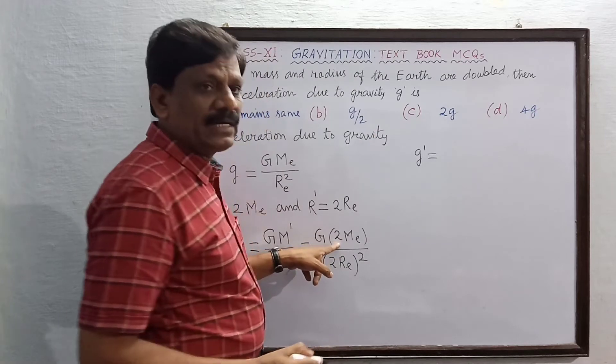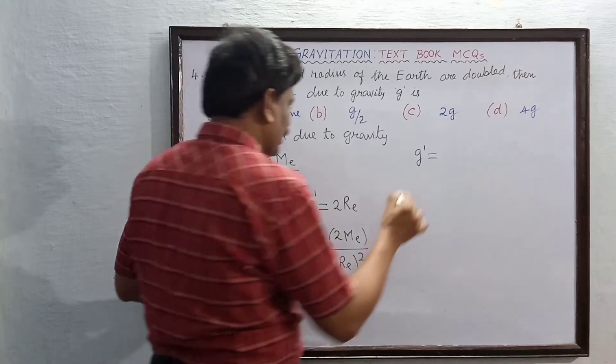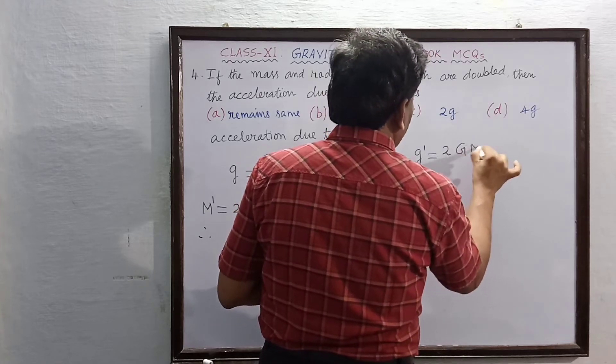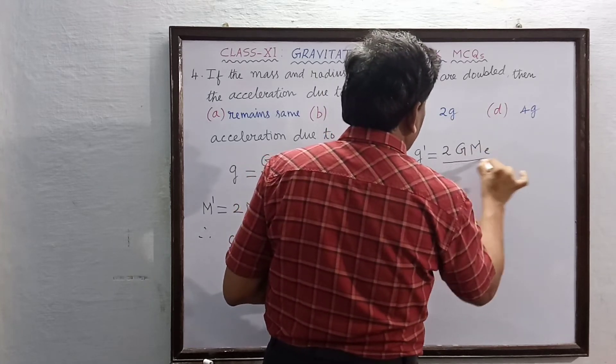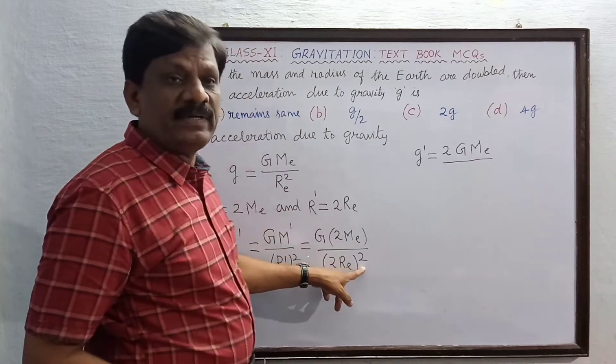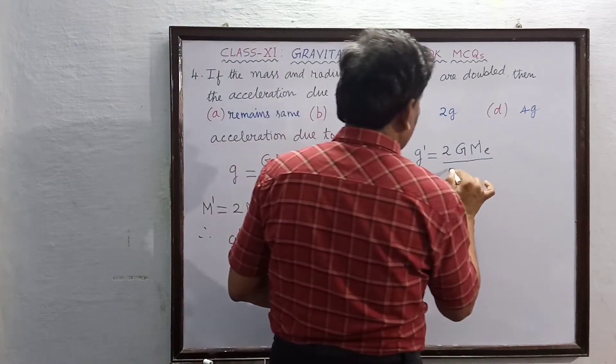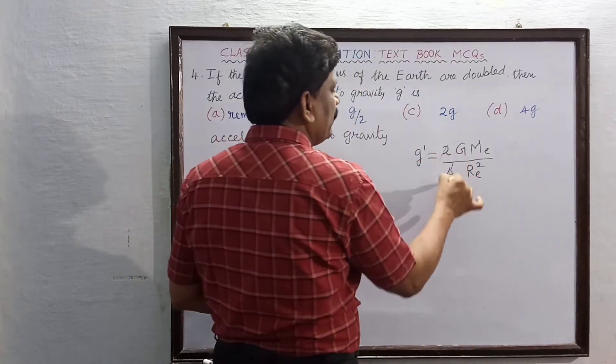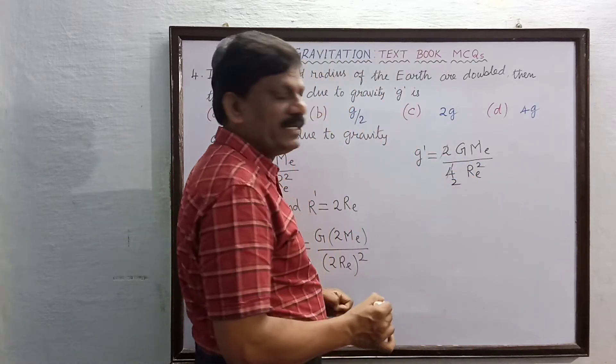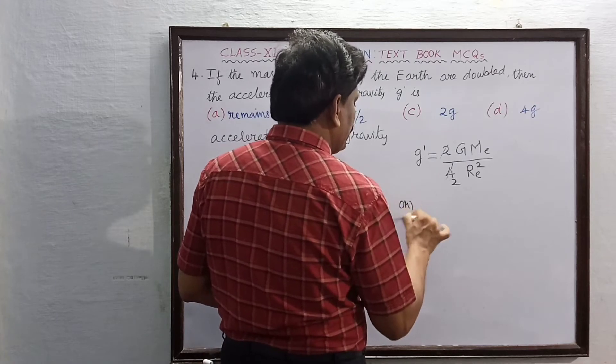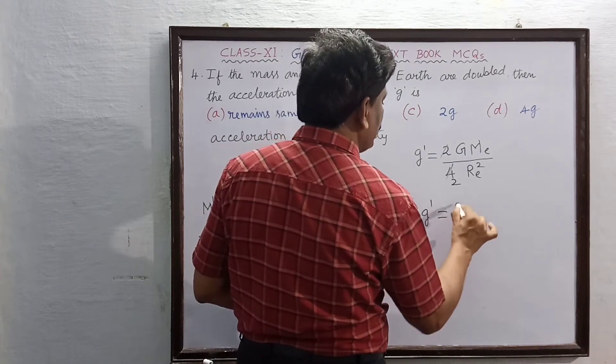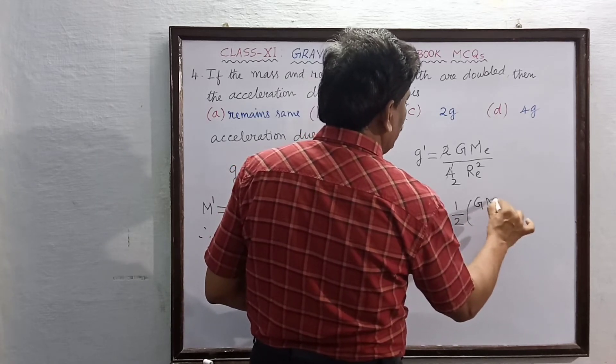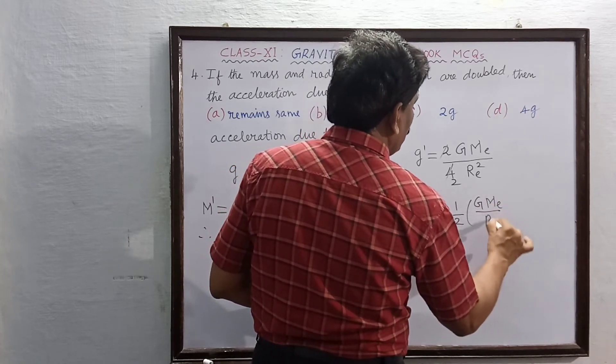G dash is equal to 2 in the numerator, 4 in the denominator. This is G into ME divided by 2 square, which is 4, RE square. Two by four, divisible by two. What is g dash now equal to? G dash is equal to 1 by 2 into GME by RE square.